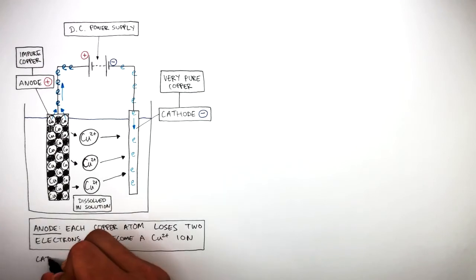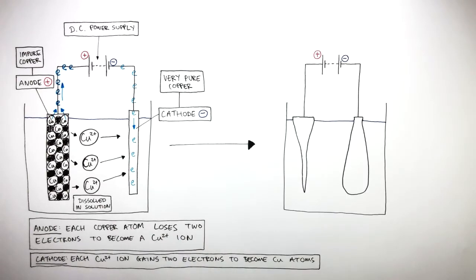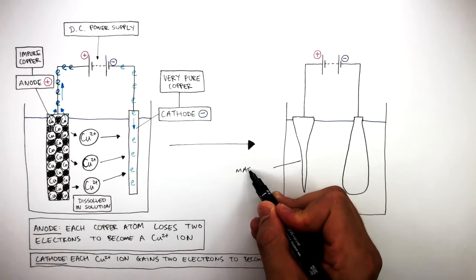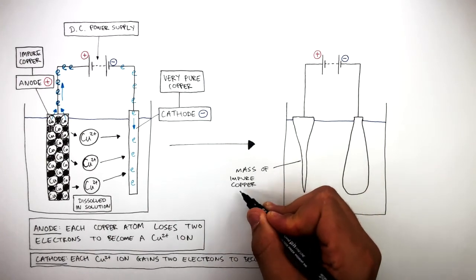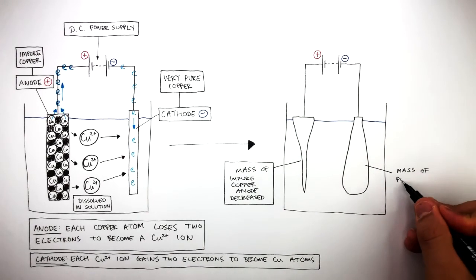So at the cathode, each Cu2+ ion gains two electrons to become copper atoms. Over a period of time, this is the result of the electrolysis of impure copper. The mass of the impure copper anode has decreased, and the mass of the pure copper cathode increases.